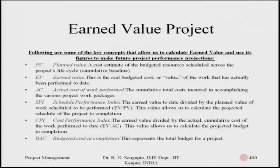The Actual Cost of Work Performed is the cumulative total cost incurred in accomplishing the various project work packages or the overall project. Comparing the first bullet — budgeted cumulative cost — with the third bullet — actual cumulative cost — you try to analyze what is the overall cost spent for the whole project versus the overall budget sanctioned, either per day, per week, per month, or per unit time.